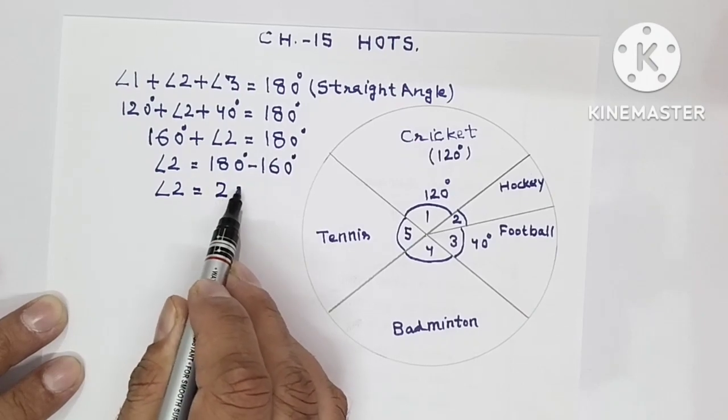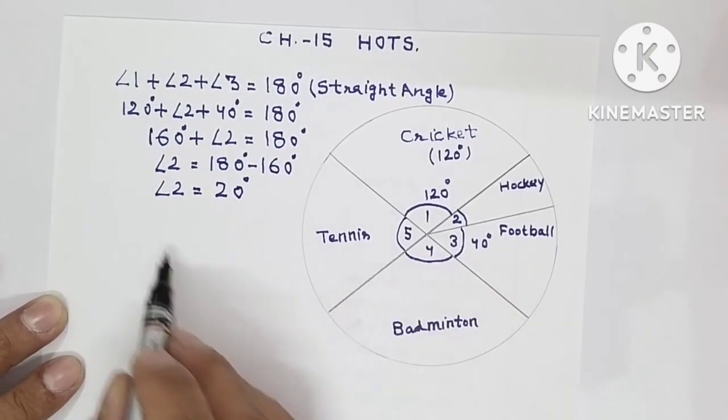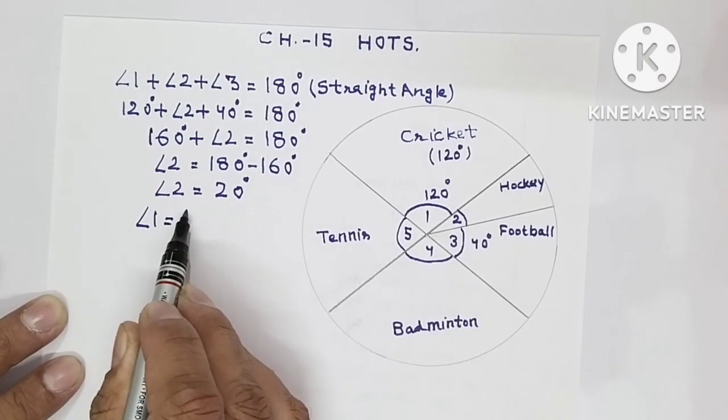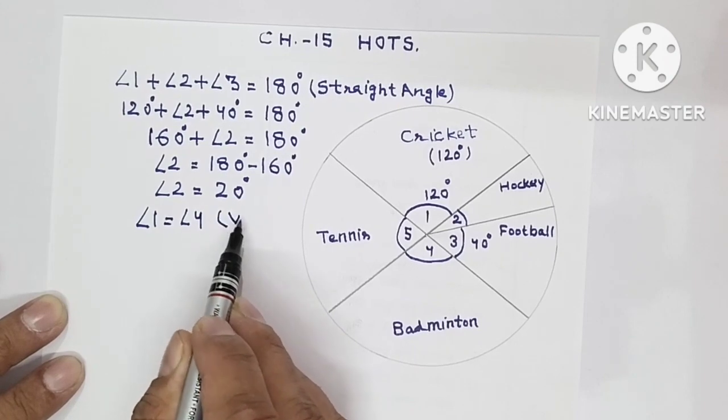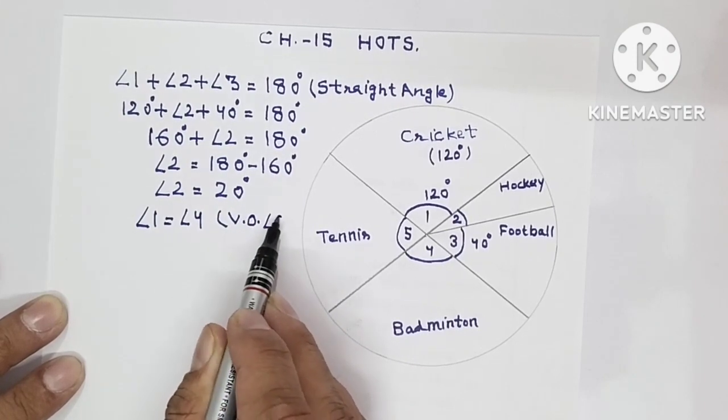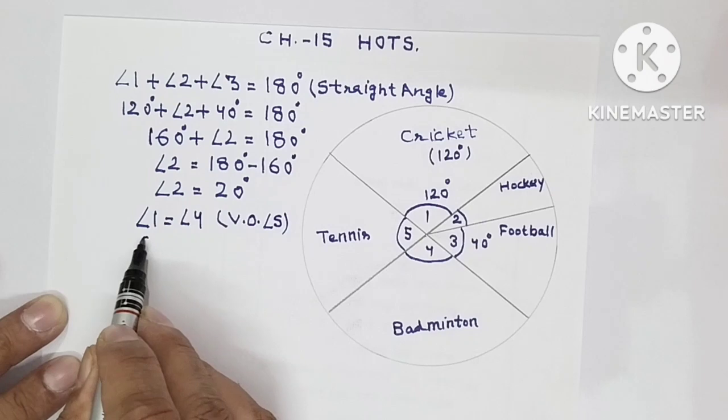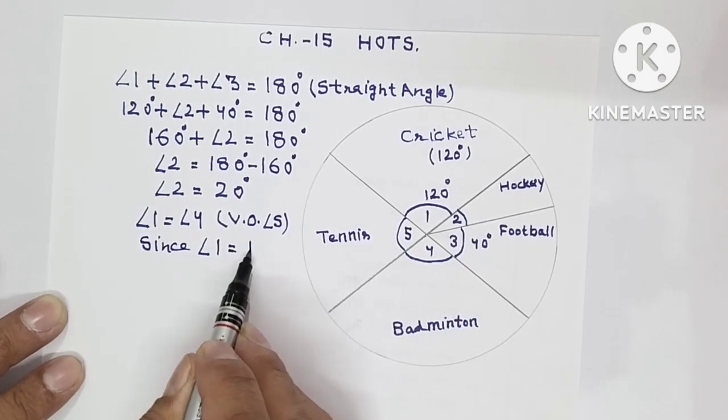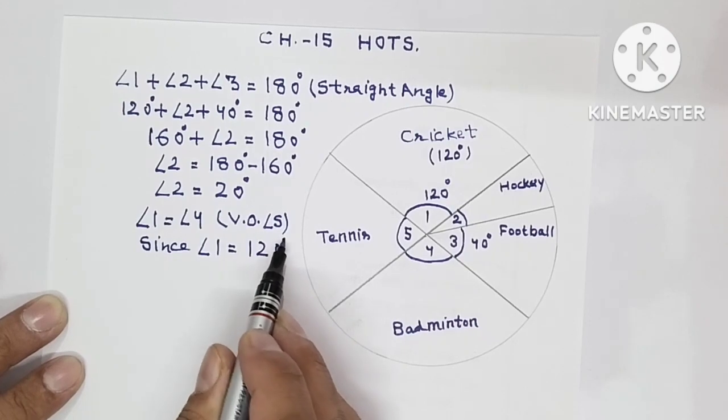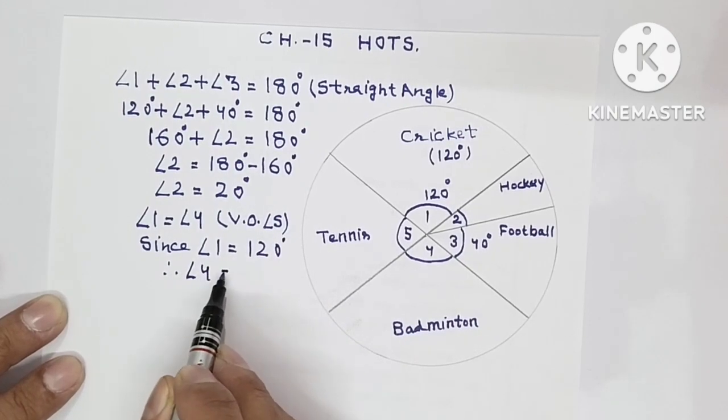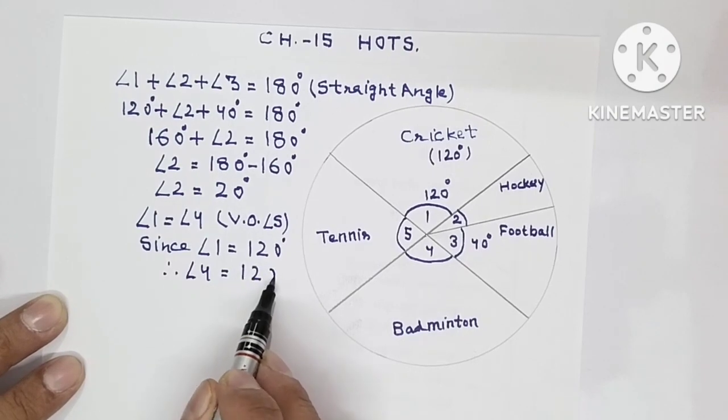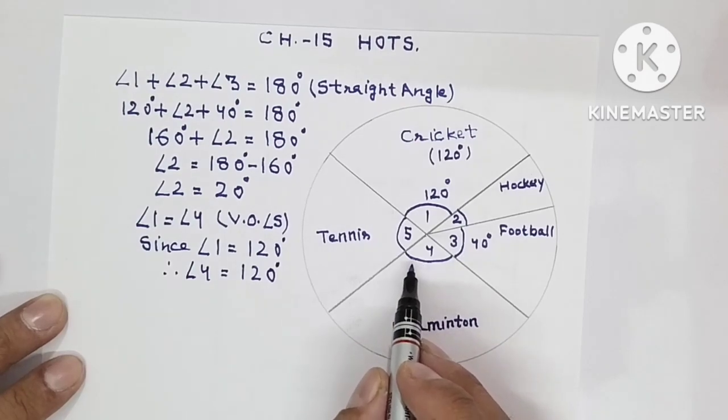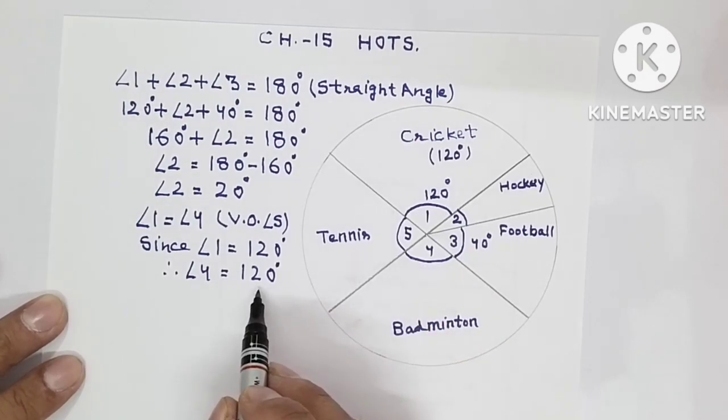So hockey's angle is how much? 20 degrees. Now these one and four are vertically opposite angles. Since angle one is already given to you as 120 degrees, angle four will also be how much? 120 degrees. Why? Because they are equal. So badminton's angle is also 120 degrees.